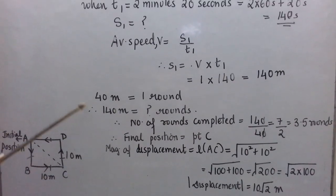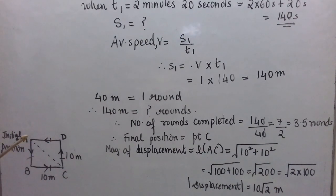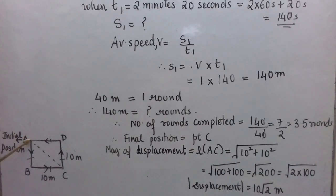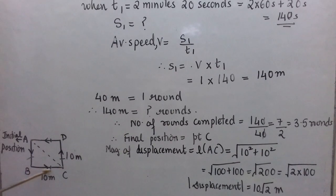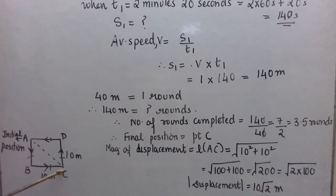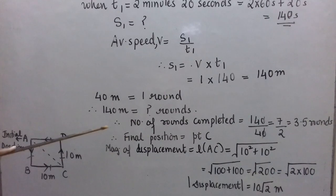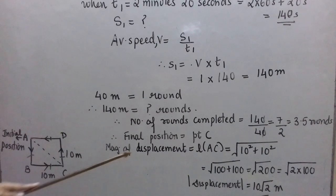Alternatively, you can simply track the rounds: the farmer completes one round in 40 seconds, second round in 80 seconds, third round in 120 seconds, reaches B in 130 seconds, and reaches C in 140 seconds. So the final position is C. Therefore, the magnitude of displacement is the length of AC = 10√2 meters, as shown.